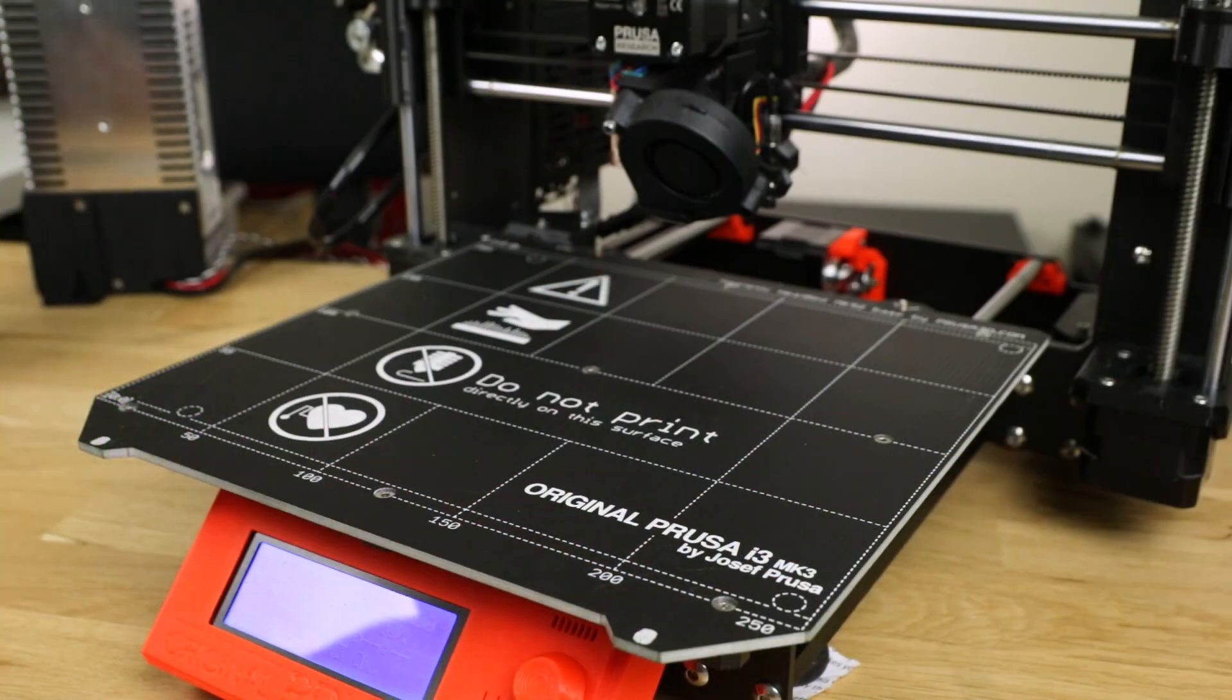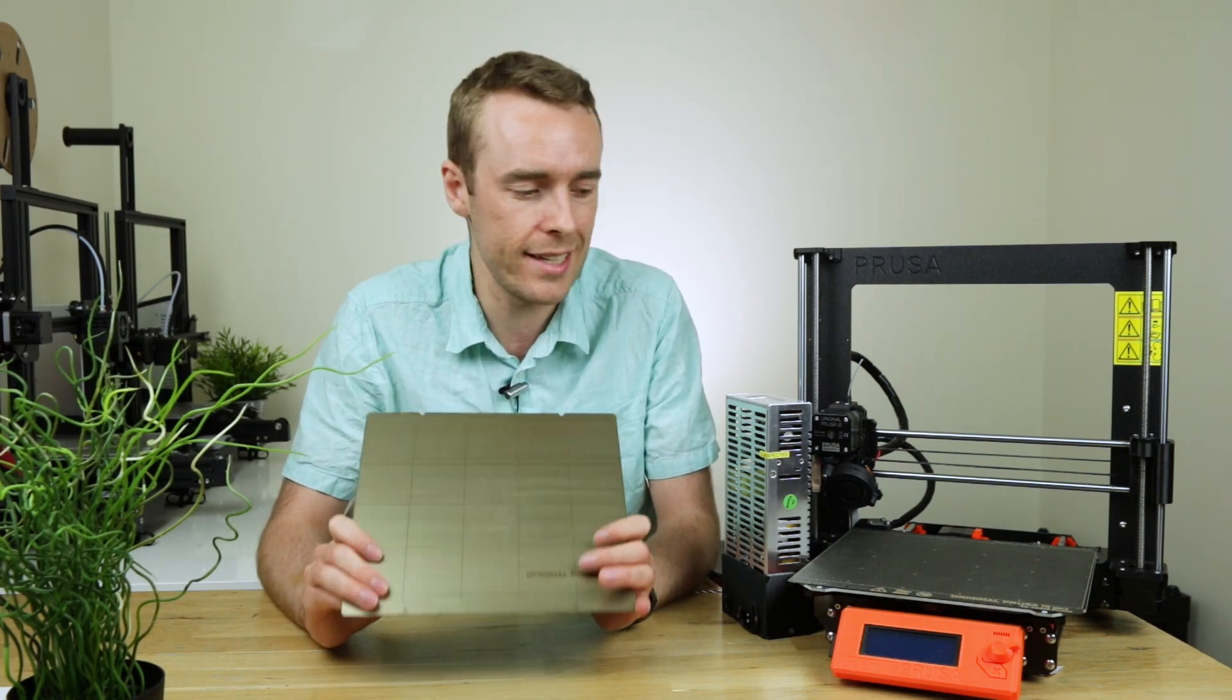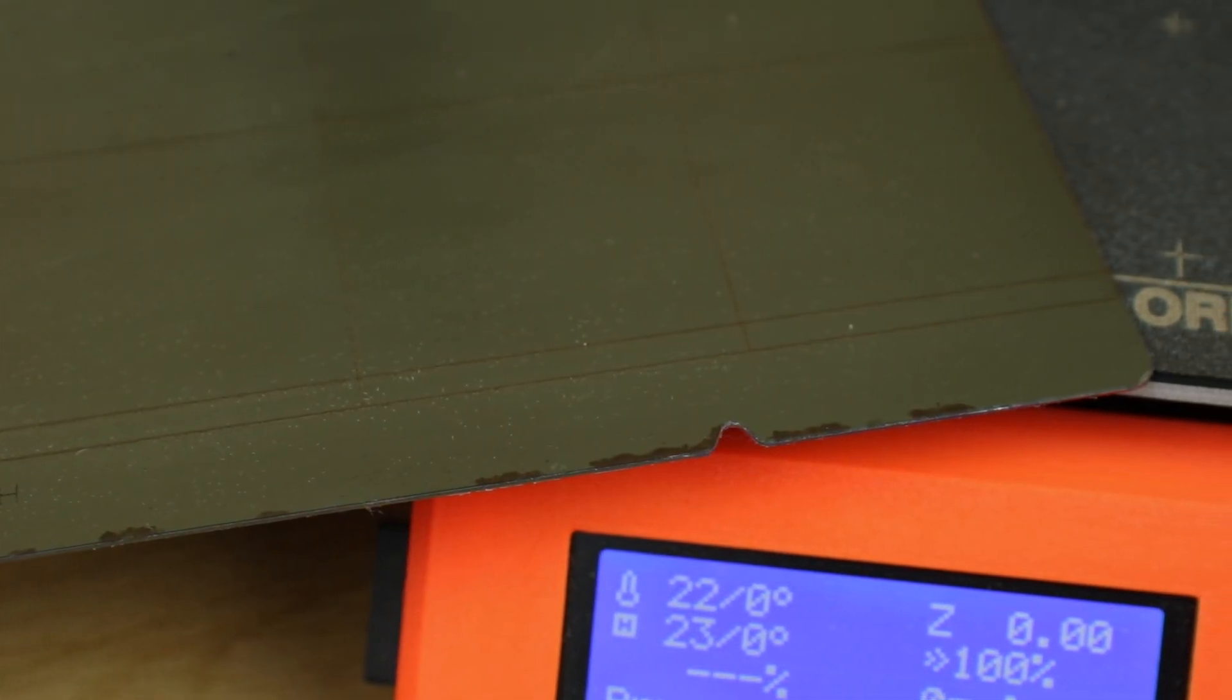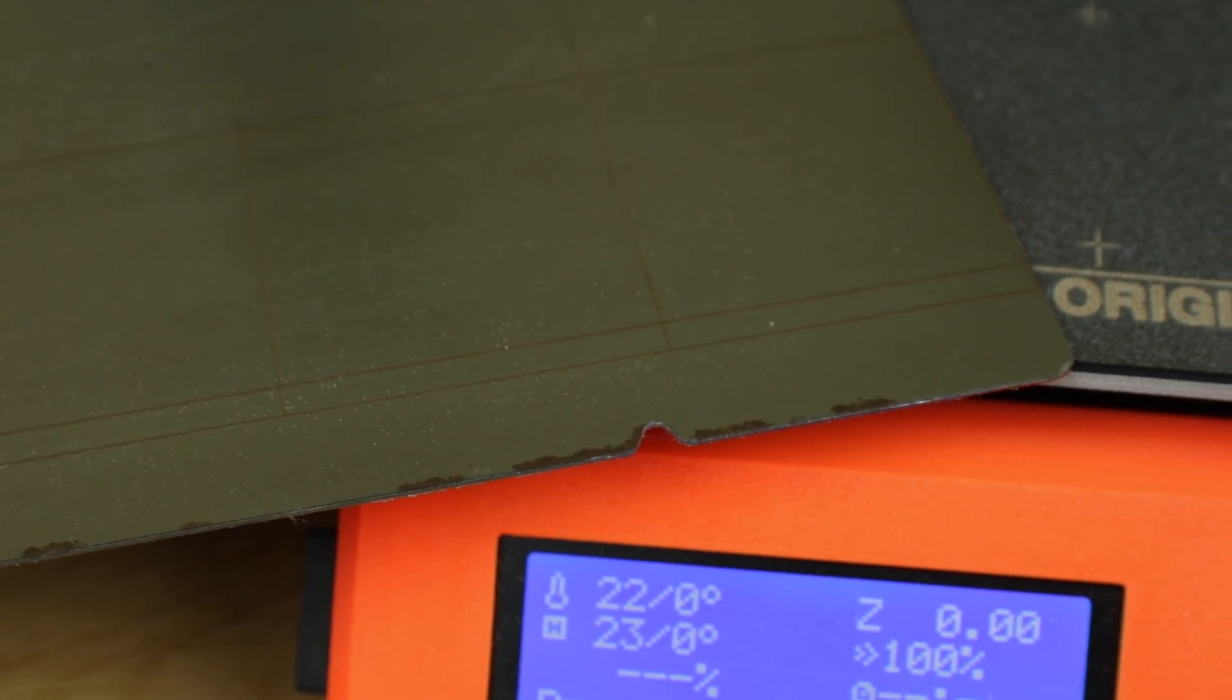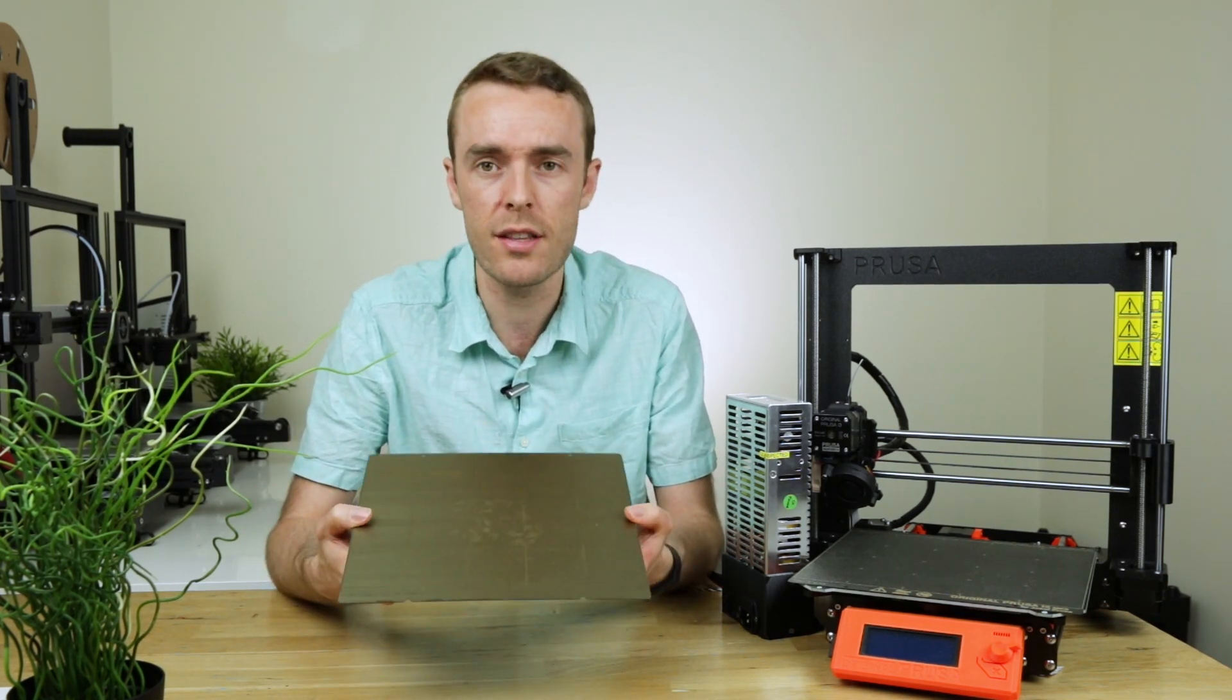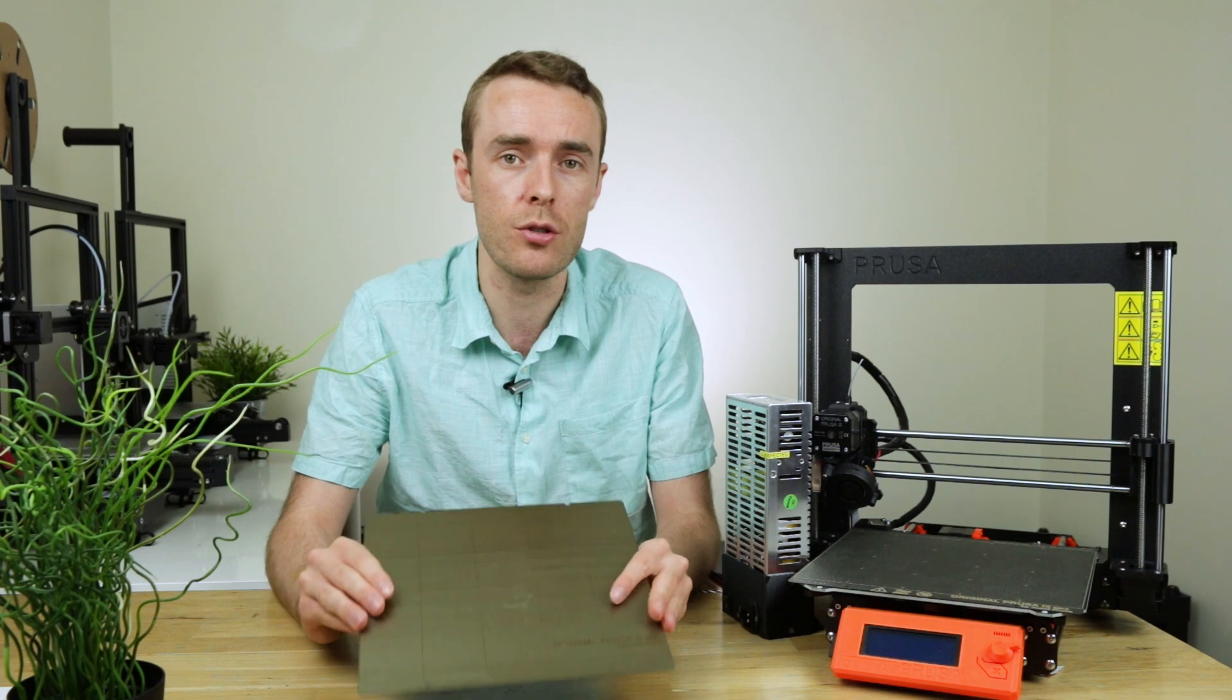Well, the first thing we can look at here is the PEI build surface. This is the original build surface that I got with the printer nearly two years ago. The material still works, the surface is not damaged, but there is some rust around the edges. Does that rust really matter? I would suggest probably not. So build surface wise, this is still a good surface. PEI is still a really commonly used material and it does still do very well.